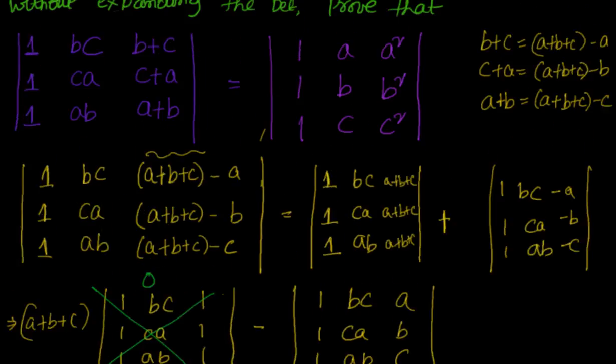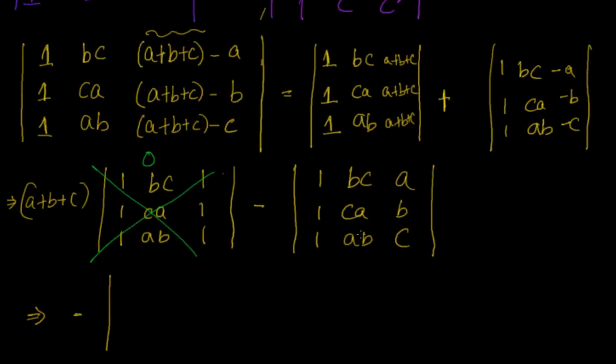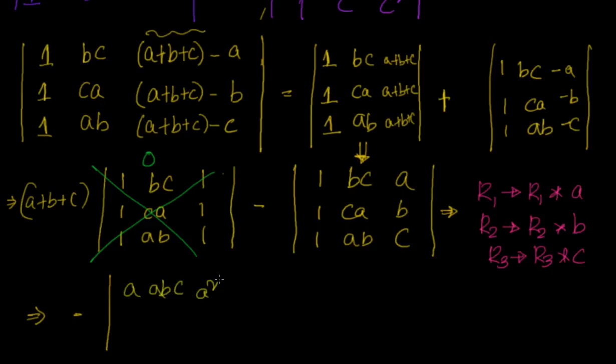So I'll have minus. Let me see what I need. I need A, A² that means I don't need BC, CA, AB terms. So we'll apply the same logic. We will multiply each row by A, B, C respectively so that I can take A, B, C common. So I will do R1 into A, R2 into B, R3 into C. Now it will be minus of, it will be A, ABC, A², then B, ABC, B², then C, ABC, C².